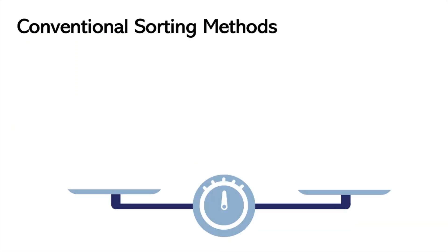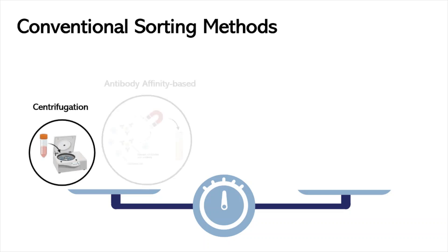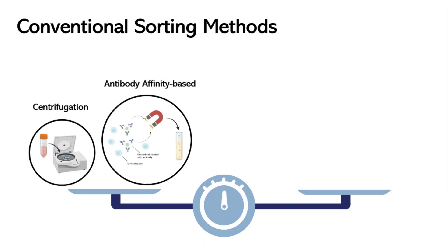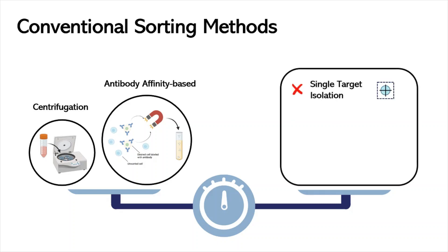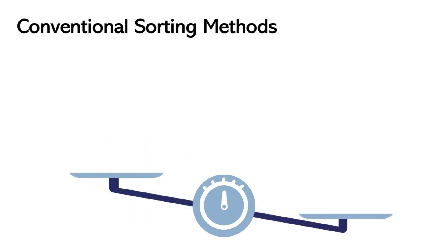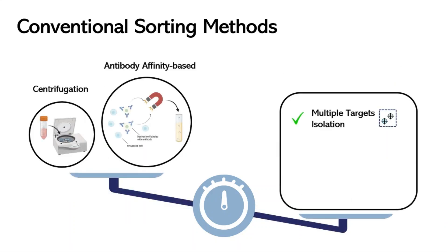Conventional blood preparation is based on centrifugation and antibody affinity-based methods. However, these processes only allow single target isolation, are laborious, and are mostly for research use only. Hence, there is a need for new technologies that allow multiple target isolation, are automated, and are convenient for clinical use.